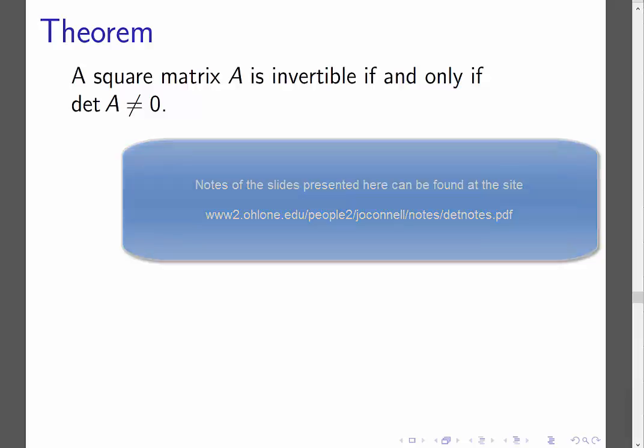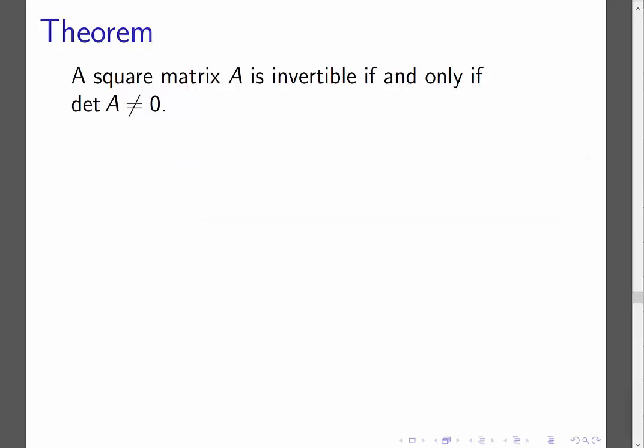And we will use that here in the proof of this theorem, which is a very important result about determinants, which says that if you have a square matrix A, then it is invertible if and only if the determinant of A is not equal to zero.